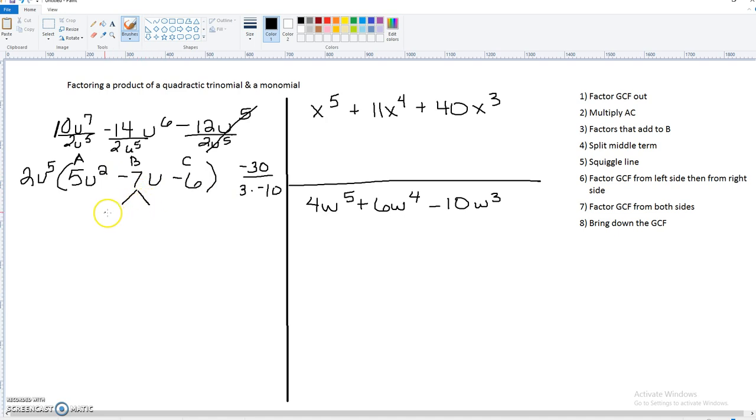So we're going to split our middle term. And I'm going to put the 10u over here with the 5, and the plus 3u over here with the 6, just to make things easier as we factor. Okay, probably should switch colors. Put our squiggle line.